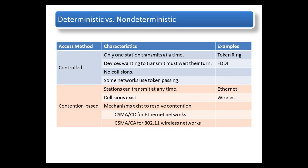When using the controlled access method, or deterministic, network devices take turns in sequence to access the medium. This makes the network very predictable and eliminates collisions altogether. Typically, this type of control is implemented in wide area networks where large amounts of data must travel long distances. Contention-based or non-deterministic methods are used on networks with plenty of bandwidth and shorter geographical scope. These networks tend to scale poorly under heavy media use, as the number of nodes increases and the probability of successful media access without a collision decreases.